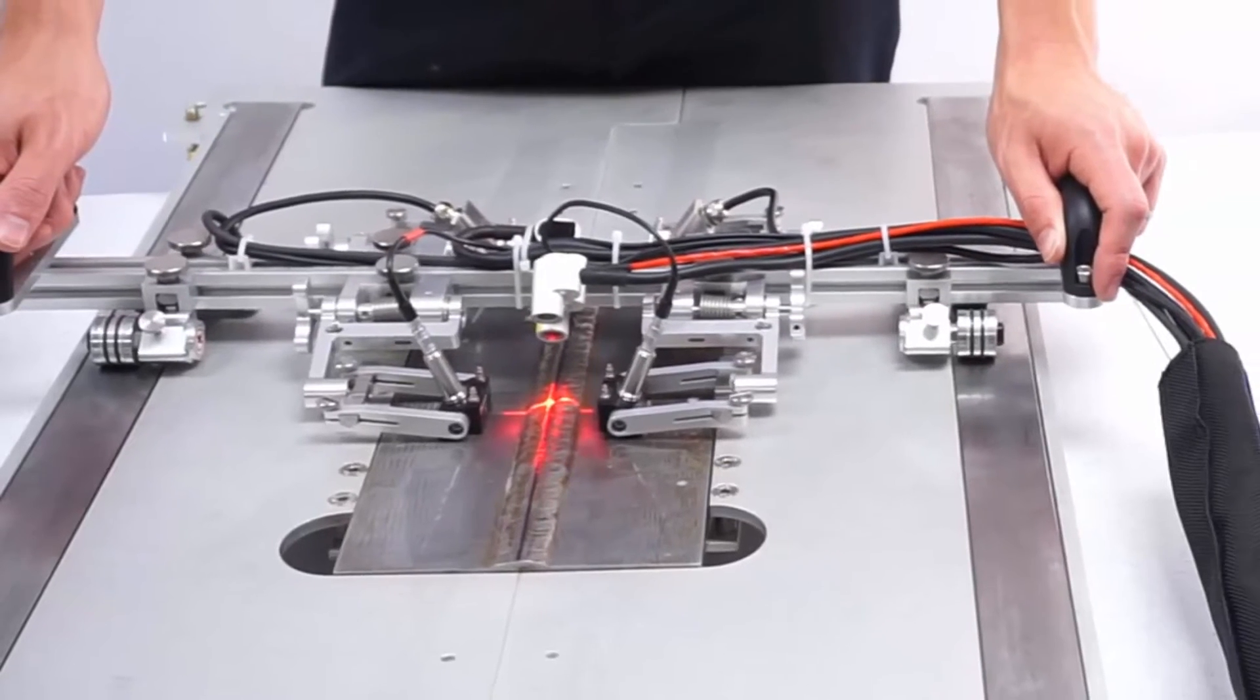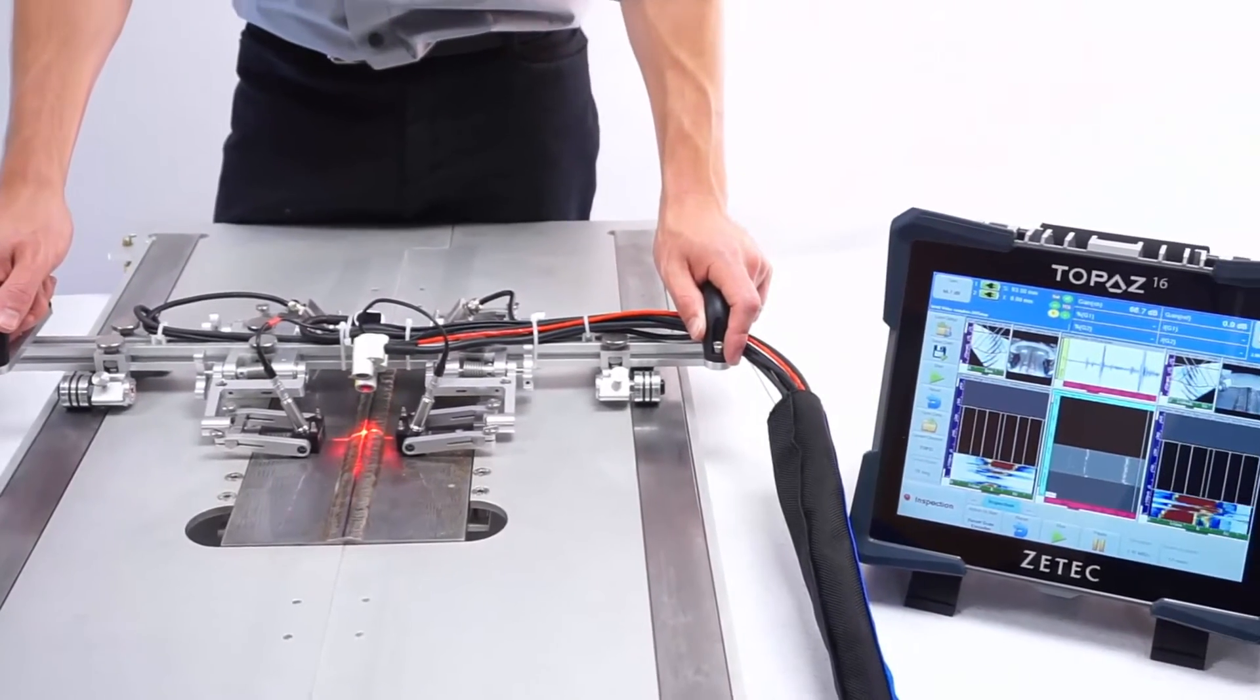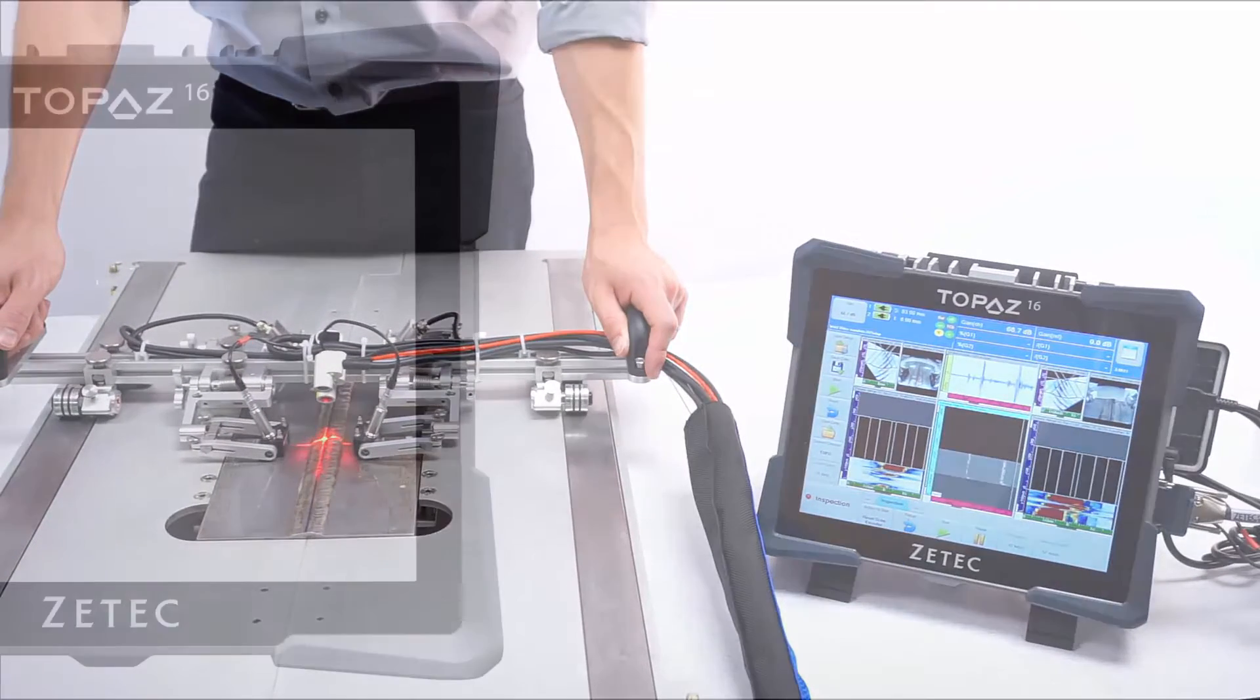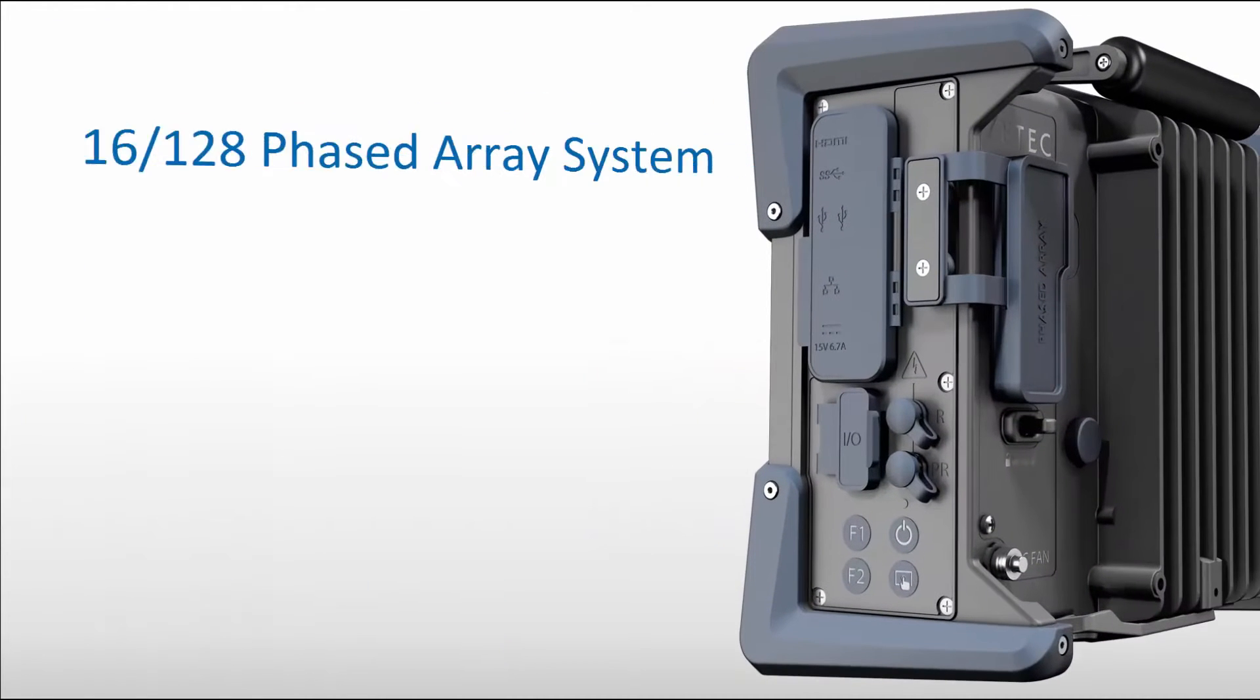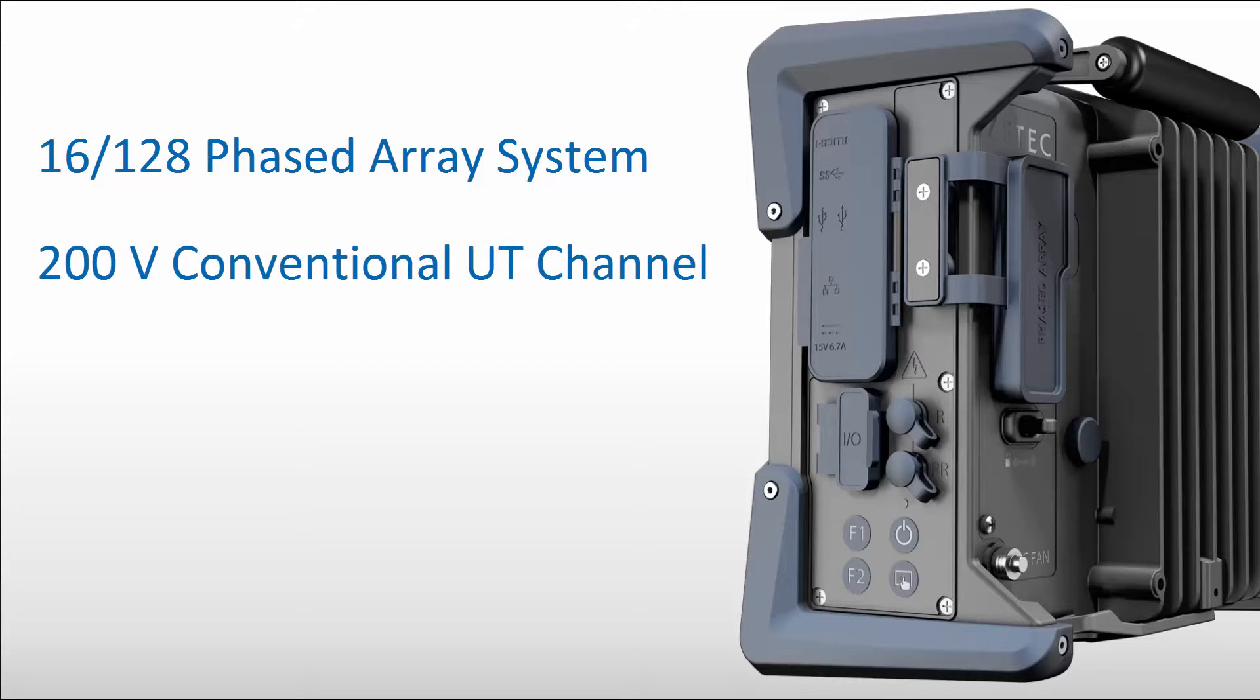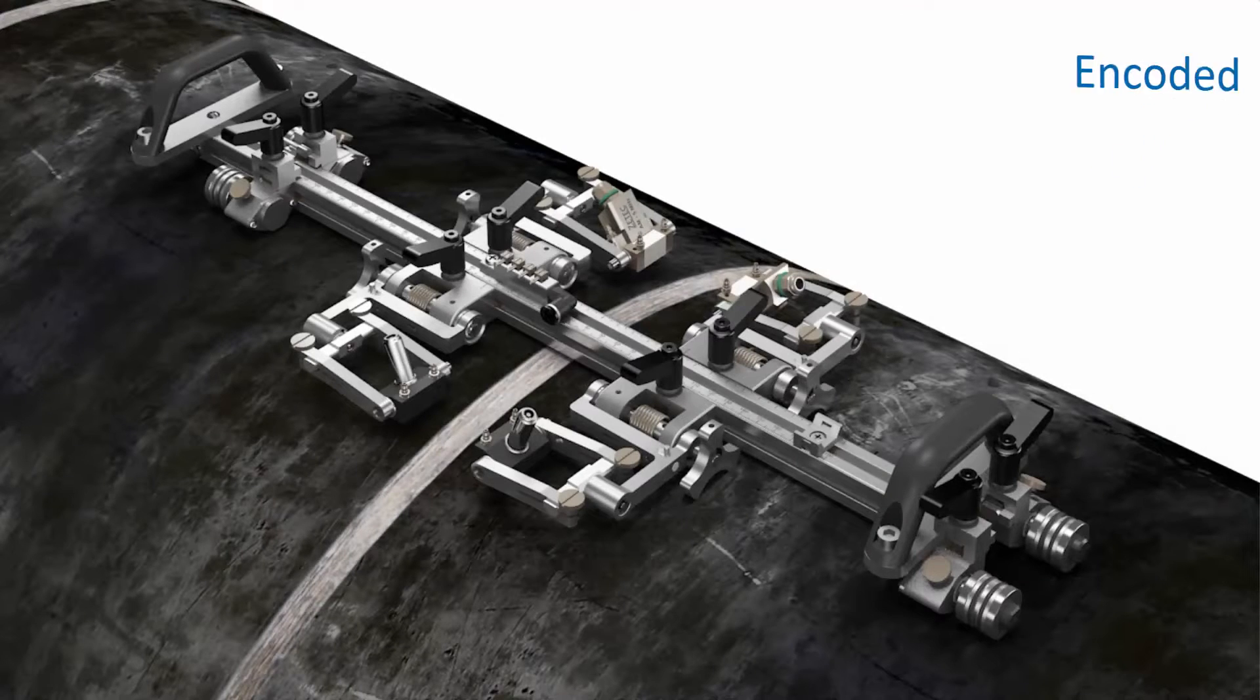These complementary techniques result in high probability of detection for a wide range of welding defects and excellent sizing capabilities for critical planar flaws. Topaz 16 is a fully integrated portable phased array unit that delivers big value in a small size. It's a 16-128 phased array system with a separated conventional UT channel at 200 volts, controlled by the powerful and user-friendly ZETEC UltraVision Touch software platform.